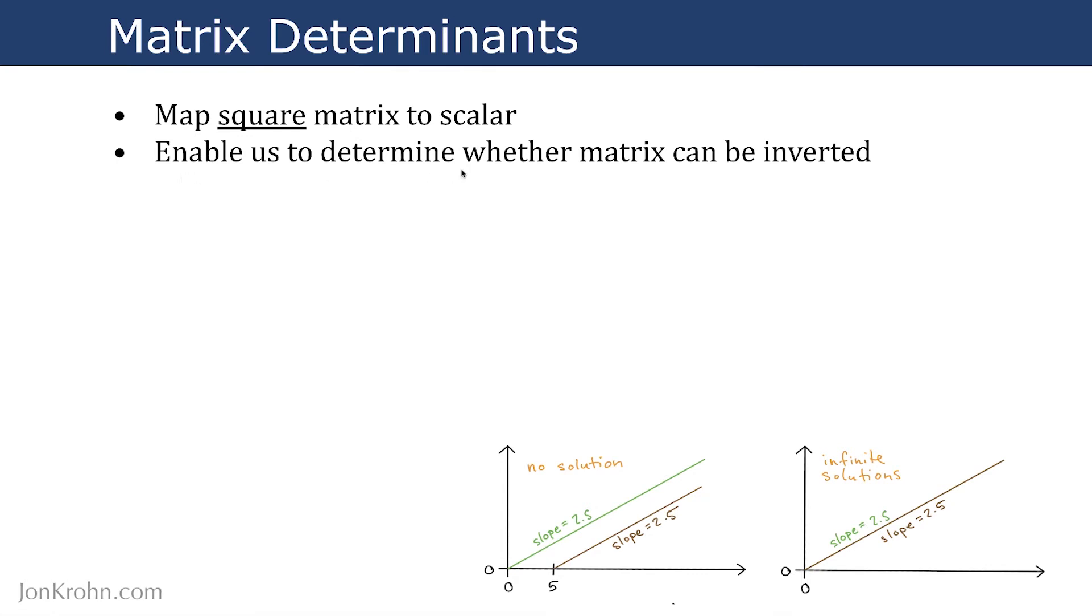But it enables us to determine whether a matrix can be inverted. And you may recall from the end of the first subject in my Machine Learning Foundation series on the intro to linear algebra, that in order to invert a matrix at all, you do as a starting point need to have a square matrix. So that's part of why a matrix determinant maps a square matrix to a scalar value.